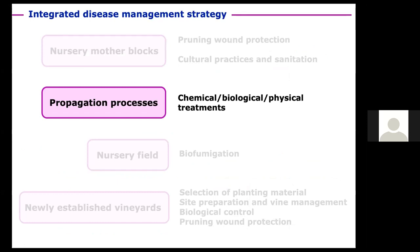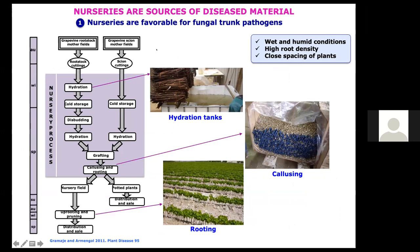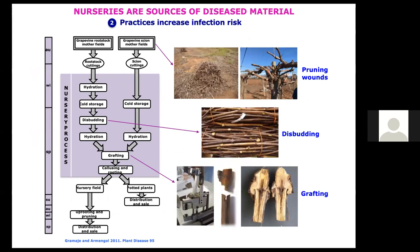In the propagation process, priority should be given to biological and physical treatments due to the reduction in availability of efficient chemicals in nurseries. Nurseries provide nearly optimal environments for fungal development: wet and humid conditions in hydration tanks, high root density within callusing containers, and the field rooting stage with generally close spacing of plants. This enhances opportunities for pathogen spread and reproduction. Production practices in most nurseries provide many opportunities for fungal trunk pathogen introduction through poor sanitation, pruning wounds, the disbudding stage, or the omega grafting machine.